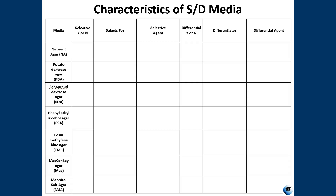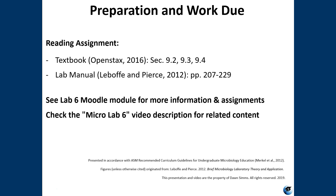I've given you a table to help keep track of all these media and what they do. You can fill it out to keep everything straight while working on lab six and also when you start your unknown project. The table covers which media are selective and what they select for, what's in the media that makes them selective, which media are differential, what they differentiate for, and what makes them differential. It would be a good idea to fill that out using your PowerPoint slides, textbook, and lab manual before you come to lab six — it will help you tremendously. Thank you for watching, don't forget to do the reading, check the description for more related videos, and leave your questions in the comments below.